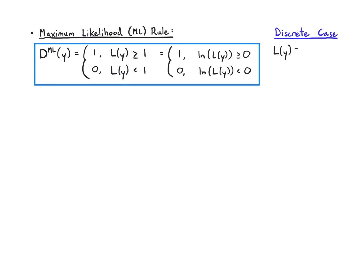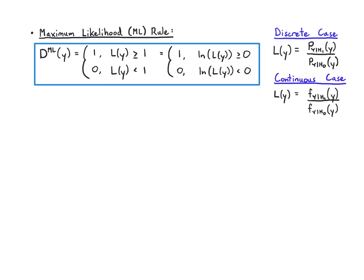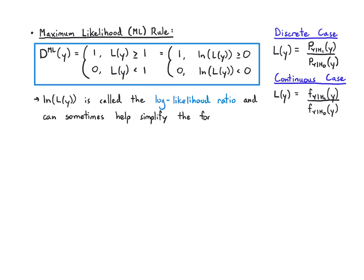In the discrete case, the likelihood ratio is P of Y given H1 divided by P of Y given H0. In the continuous case, it's the PDFs: f of Y given H1 divided by f of Y given H0. The log of L(Y) is called the log likelihood ratio, and the reason we sometimes use this is that it helps simplify things further.